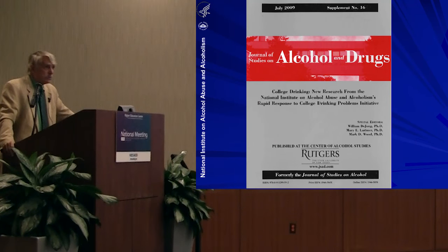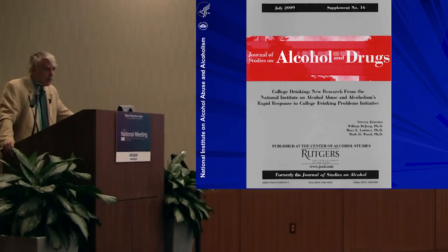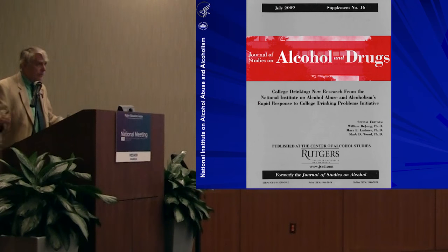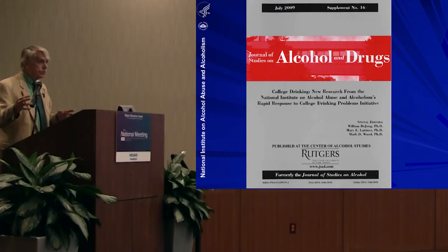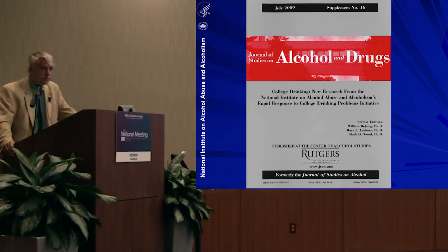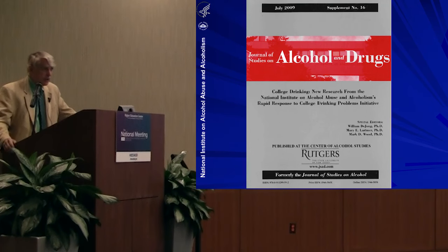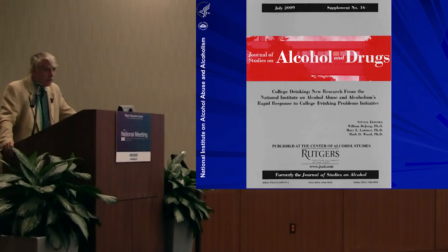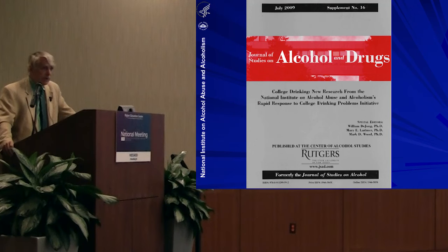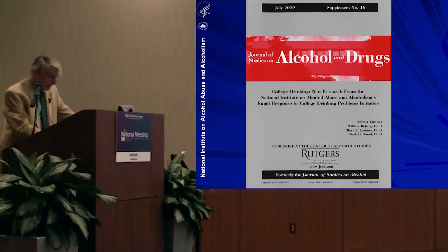Shortly after the report was released, my institute issued a request for applications called a Rapid Response to College Drinking Problems. After a national competition, five leading researchers were matched with 16 colleges and universities willing to test new and innovative approaches. A special supplemental issue of the Journal of Studies on Alcohol and Drug published in 2009 summarizes much of what we learned. We still place a high priority on reducing not just college drinking but college-age drinking, and at least a third of my division's budget goes to research to prevent college and underage drinking.